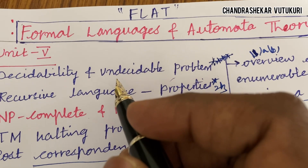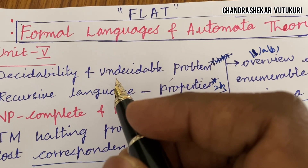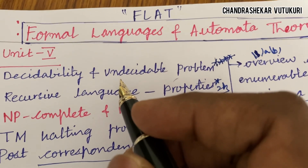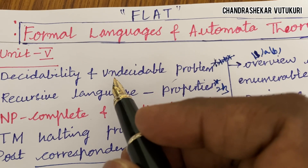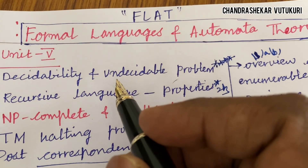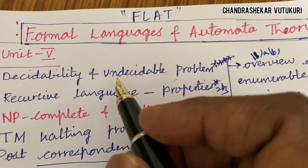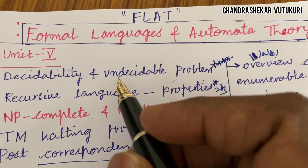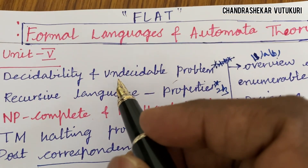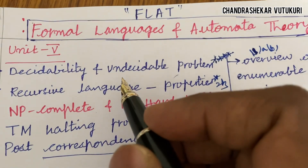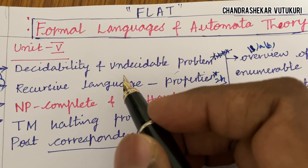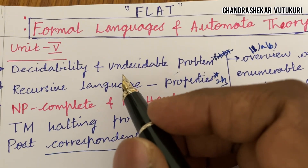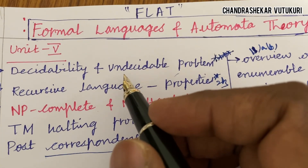As per the notification received from JNTUH, this time the question paper pattern consists of Part A as well as Part B. Part A consists of short questions — 2 and 3 mark questions — worth 25 marks from all 5 units. The remaining Part B questions from Q2 to Q11 are from all 5 units and consist of 50 marks put together.